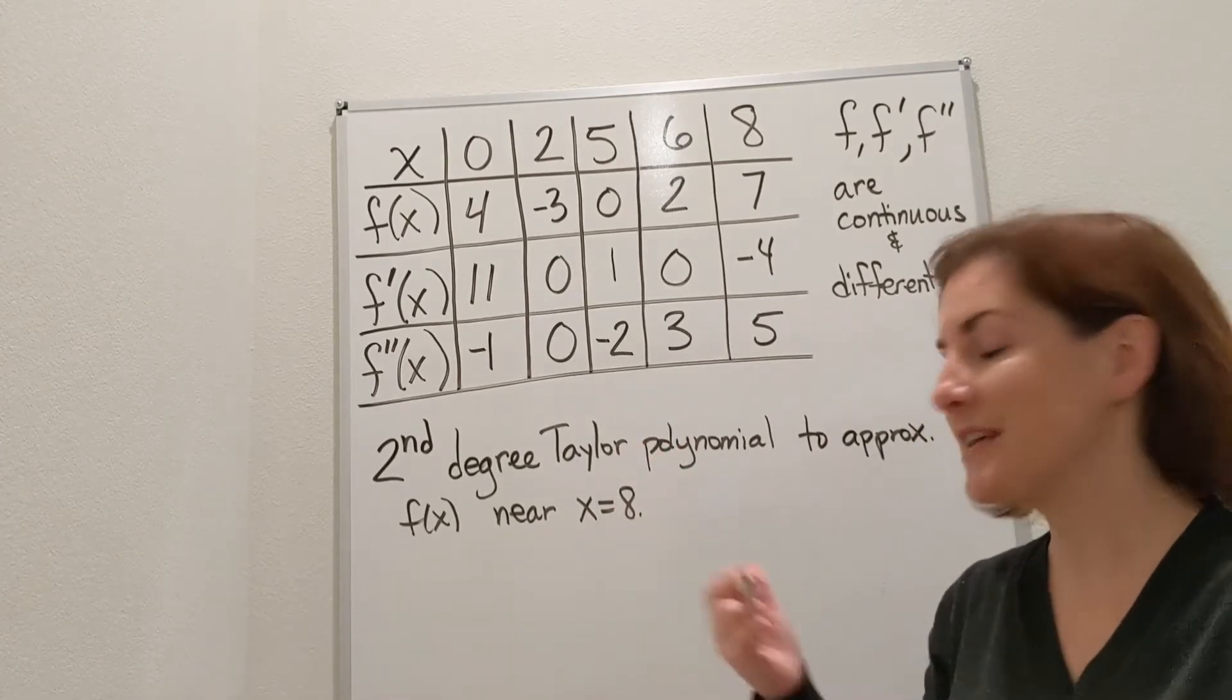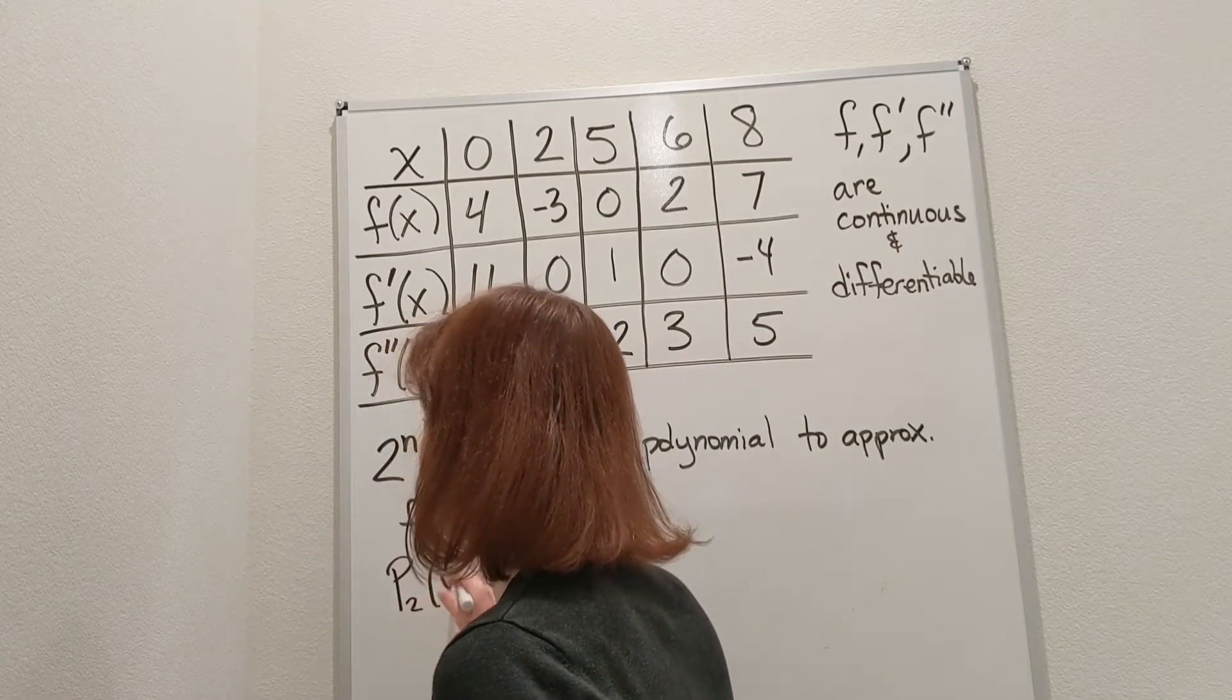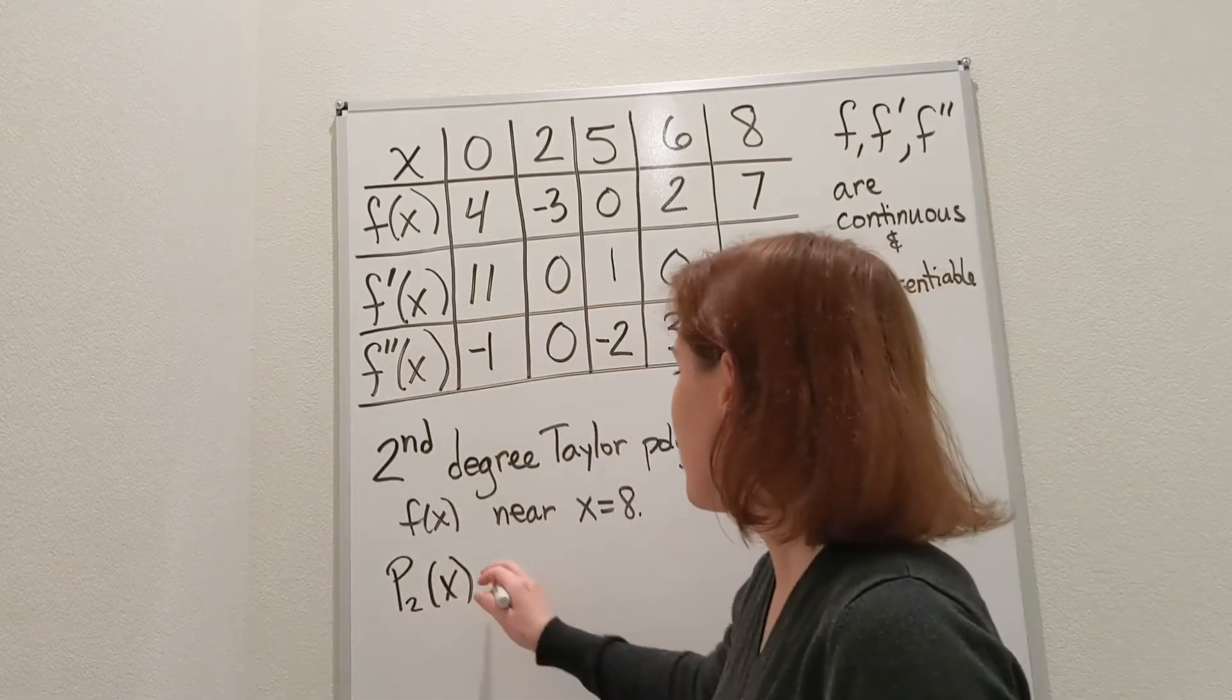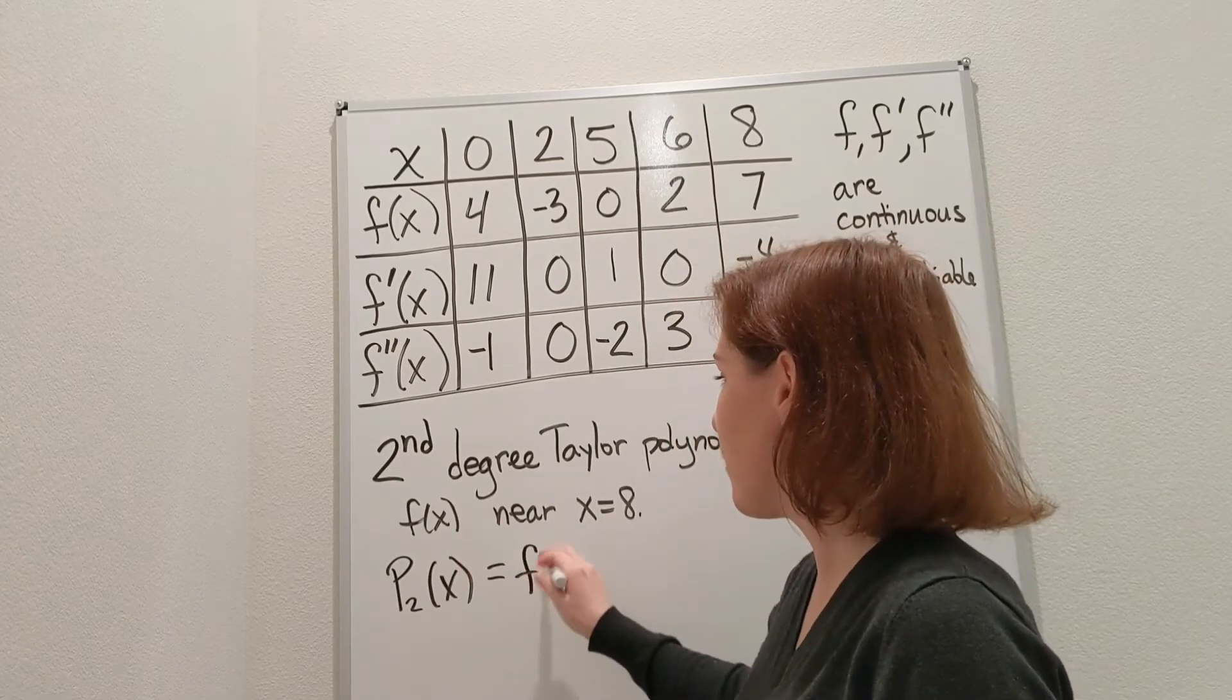When looking at a second degree Taylor polynomial, I call it p sub 2 of x. What I'm going to do for this, if I'm approximating f near x equals 8, I want f of 8.